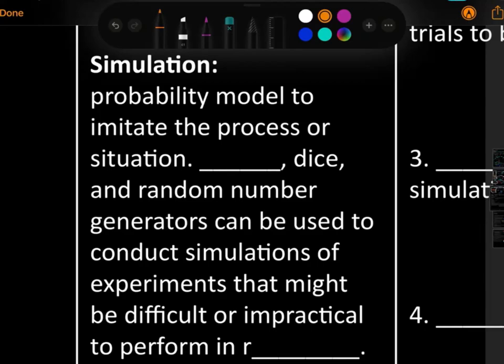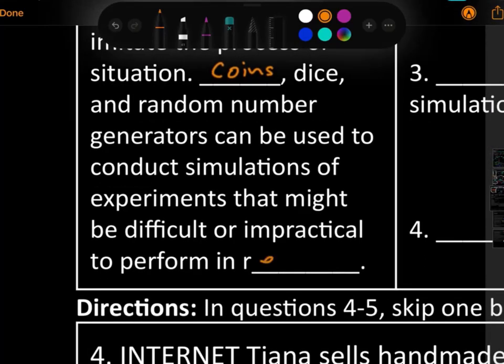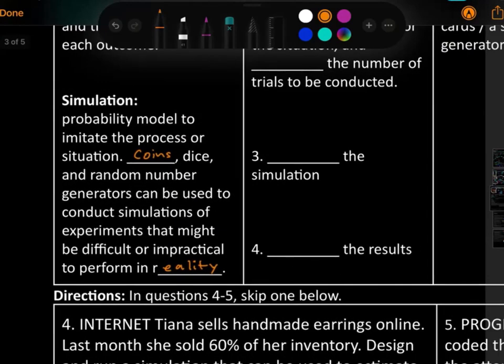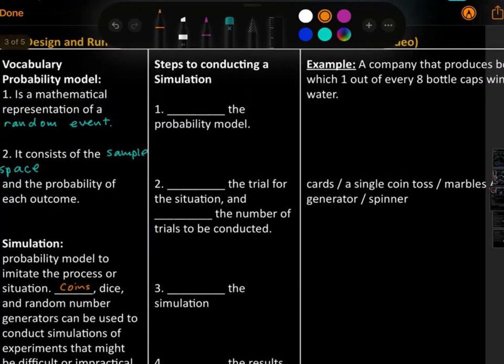Simulation is a probability model to imitate a process or situation. Coins, we've done that before. Dice and random number generators—like basically the computer calculator can generate numbers at random. Can be used to conduct simulations of experiments that might be difficult or impractical to perform in reality. Would you really want to flip a coin 10,000 times? Or roll the die 100 times?